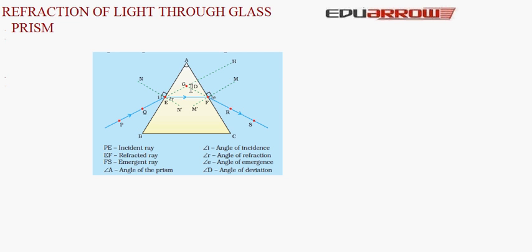This angle A is known as the angle of prism. The angle made by incident ray with the normal is clearly angle of incidence. These are the two angles of refraction.